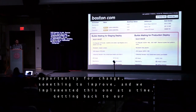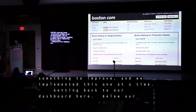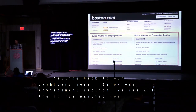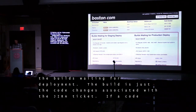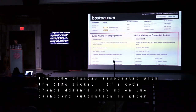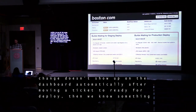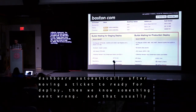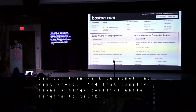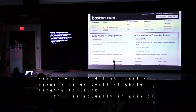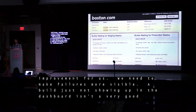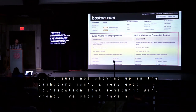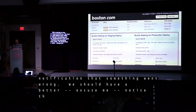Getting back to our dashboard, below the environment section we see all the builds waiting for deployment. A build is just the code changes associated with a Jira ticket. If a code change doesn't show up on the dashboard automatically after moving a ticket to Ready for Deploy, we know something went wrong — that usually means a merge conflict while merging to trunk. This is actually an area of improvement for us; a build just not showing up isn't a very good notification that something went wrong.